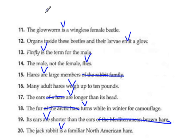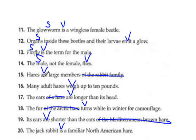So if we go through to find our subjects: number 11, who or what is? The glowworm. 12, who or what emit? The organs emit. 13, who or what is? The firefly. Who or what flies? The male. 15, who or what are? The hares. 16, who or what weigh? The hares. 17, who or what are? The ears.